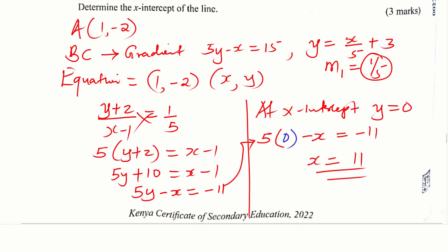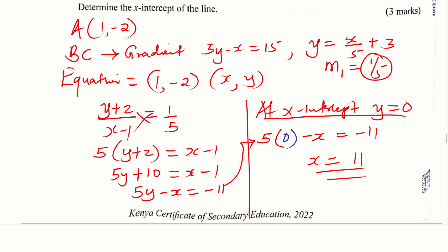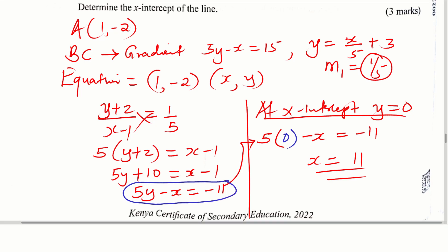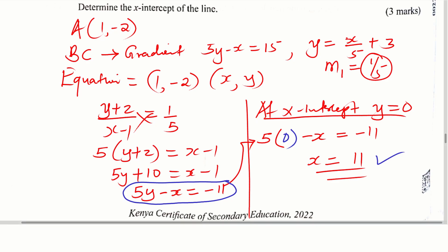Remember this concept: at the X intercept, the value of Y is 0. So take the equation obtained, substitute Y with 0, and that gives the X intercept as 11.